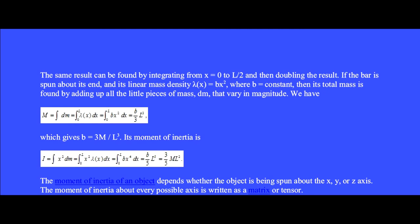Its moment of inertia is found from the integration of x squared dm, or x squared lambda dx, from 0 to l. But lambda is bx squared, so the integrand is bx to the fourth, and the integration gives b over 5 times l to the fifth. Substituting back b equals 3m over l cubed, we find that the moment of inertia is I equals three fifths ml squared.